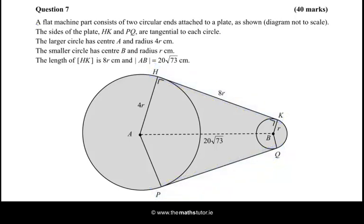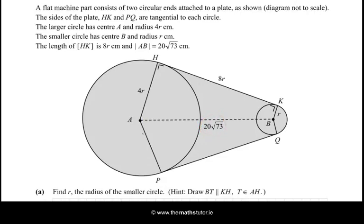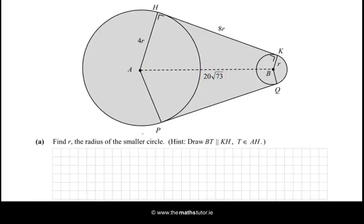The larger circle has centre A and radius 4R, the smaller circle has centre B and radius R. The length of HK is 8R and the length of AB, which is the line joining the two centres, is 20√73. Okay, so that's all shown on the diagram. We can see that.